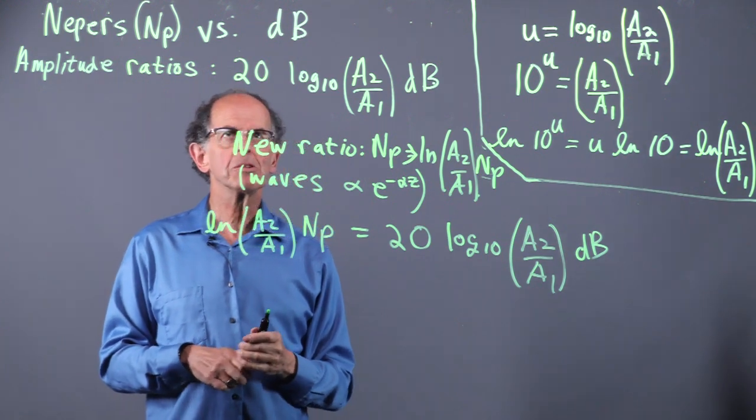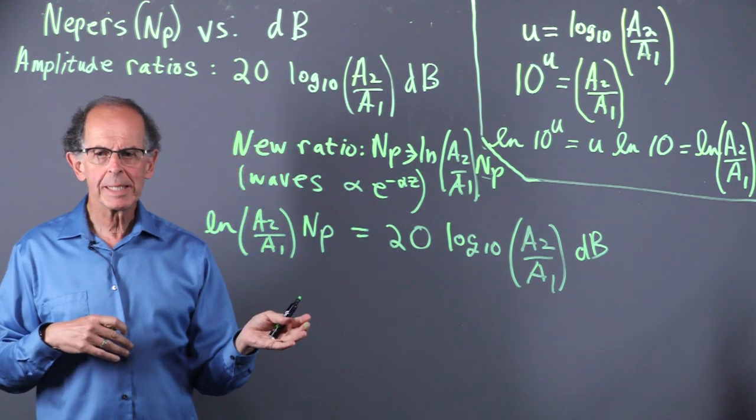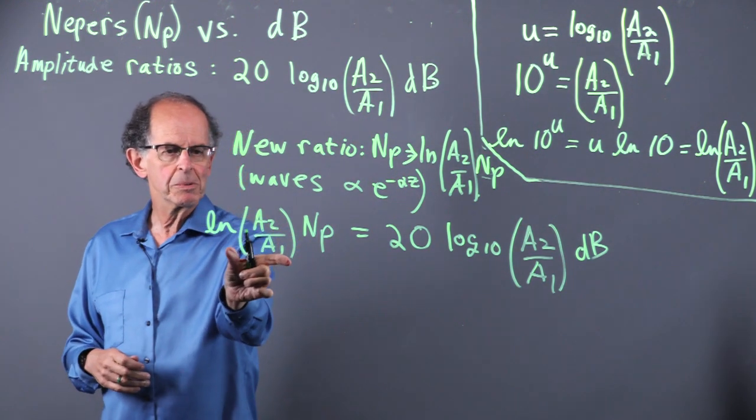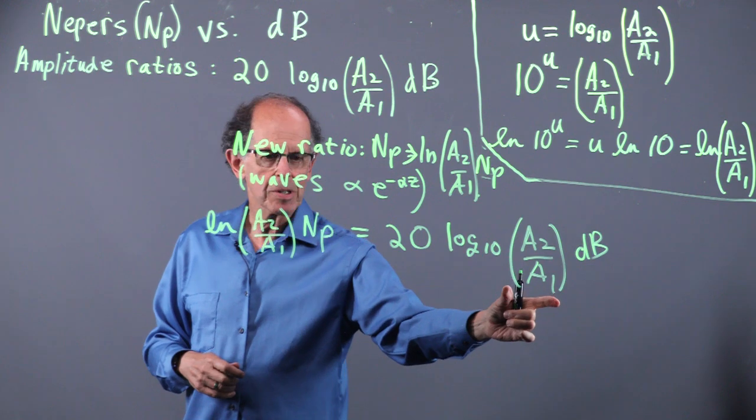That's the conversion we'd like to do, so you can quickly go from one description to the other, and to get one NIPR, we just divide both sides by the log.